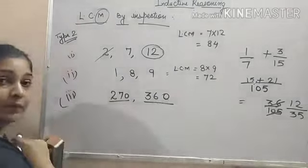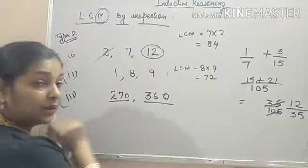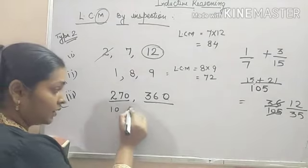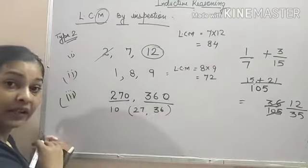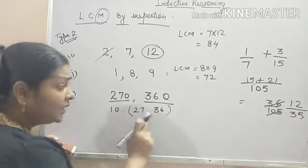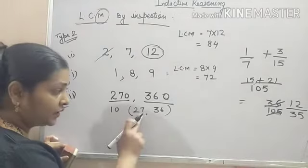See, you can see that both the numbers are comprising of 0's. That means they are the multiple of 10's. Take out 10 outside. What is left? 27 and 36. Now, 27 and 36 are having 3 as the common factor.